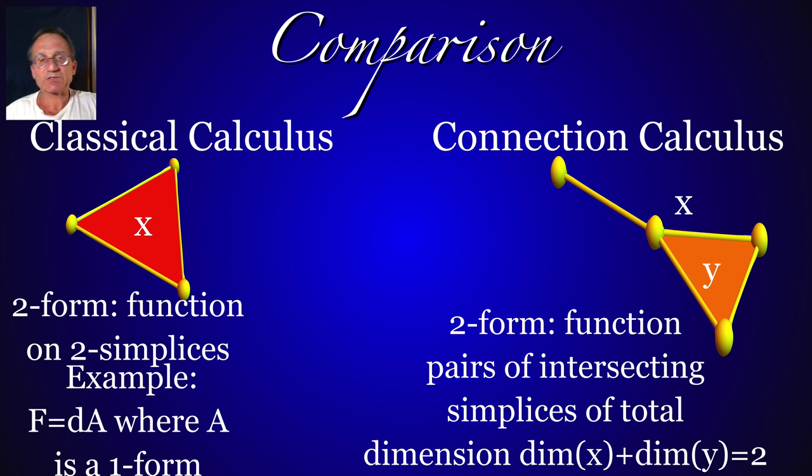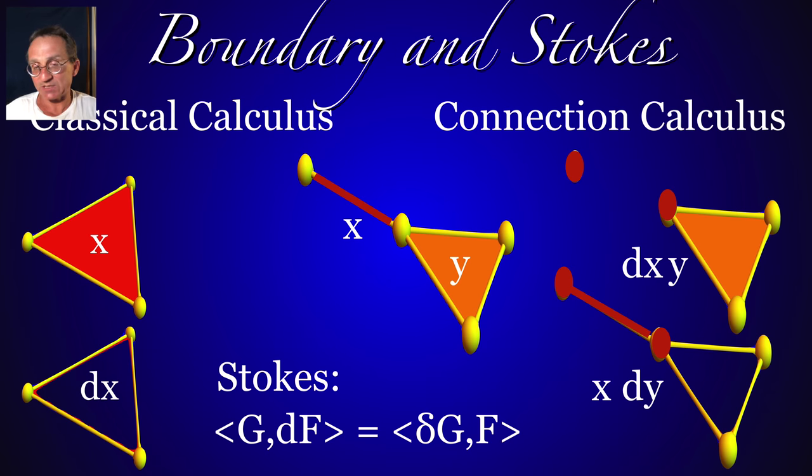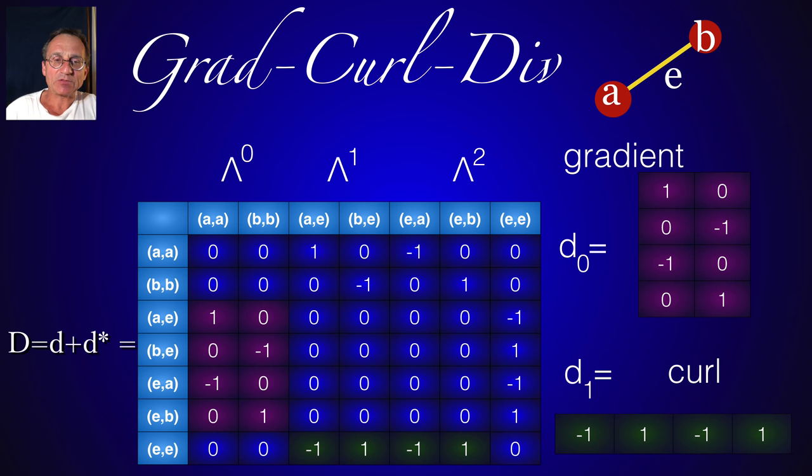So there is now a calculus, there is a classical calculus, which deals with Euler characteristic. There is a connection calculus, which deals with the Wu characteristic. And one can do everything you can do also here. So you can look at Stokes' theorem, you can look at physics, you can look at the Maxwell equations, or whatever you want to do.